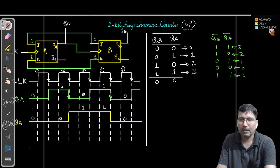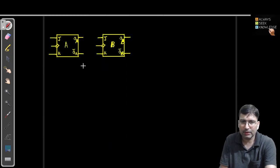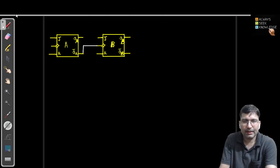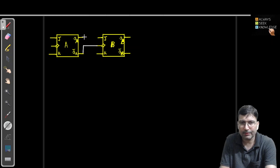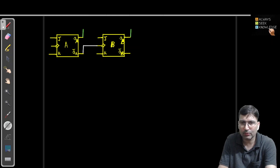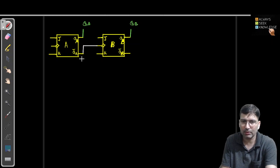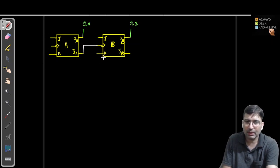There is another way also. In the second method, what we can do is we connect QA bar as the clock to the next flip-flop, and we still take the same pins as output — we still consider QA and QB as the output pins. The only change we are making is we are passing QA bar as the clock to flip-flop B.